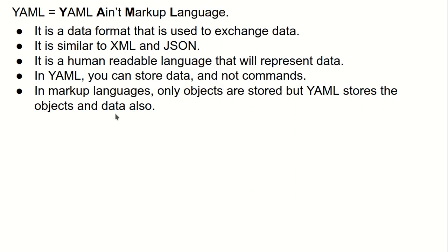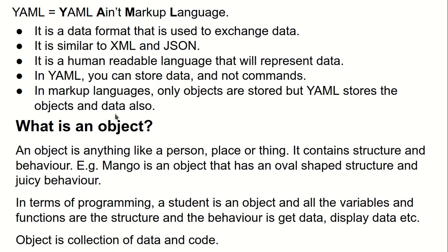So what is an object? An object is everything — a person, a place, or a thing. I am an object, you are an object, a car is an object, a fruit is an object. Basically, an object contains structure and behavior. For example, a mango is an object that has a structure — an oval shape — and a behavior — it is juicy.